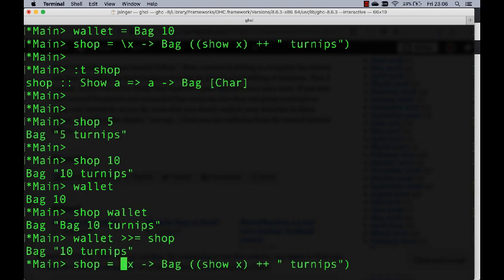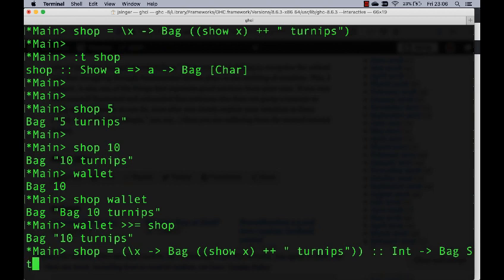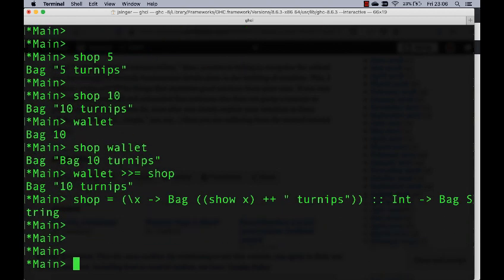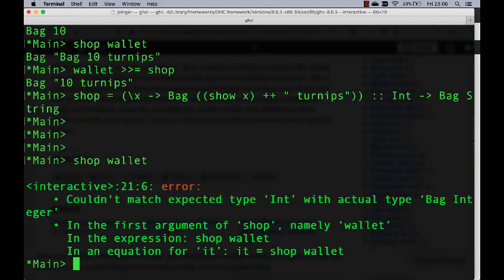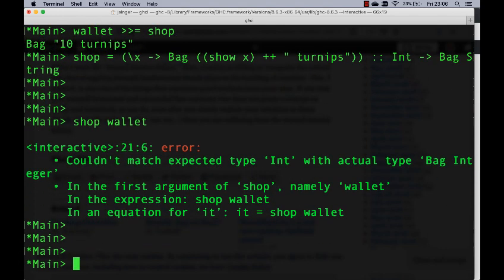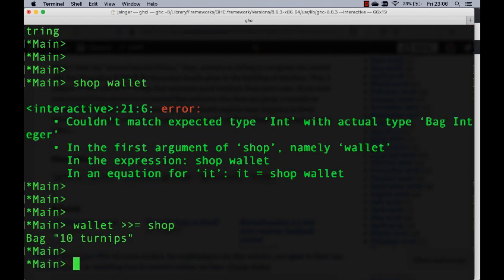What I really wanted to do was say wallet bind shop, which should give us back a bag with 10 turnips in. So my problem is, I want to constrain lambda x so the x is only an int. So I want this whole thing to have type int goes to a bag of string. So now I've constrained it. If I go back here and try shop wallet, it says I can't match an int with a bag of int. But if I go wallet bind shop, then I should still get my bag with 10 turnips. Great. This is only one way of explaining monads. And it may or may not be an intuitive way. But thanks for humoring me anyway.